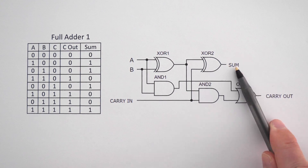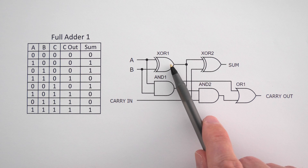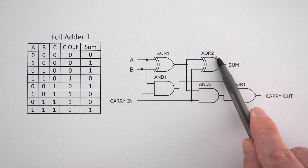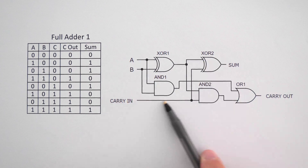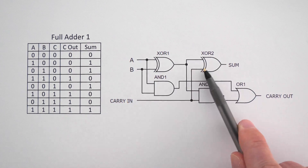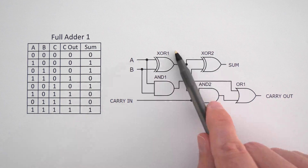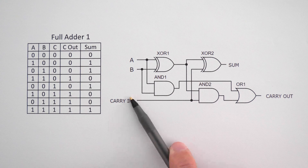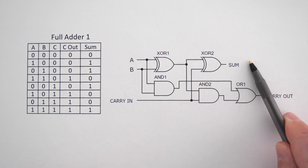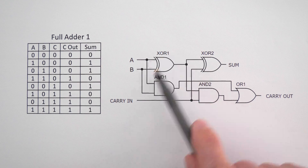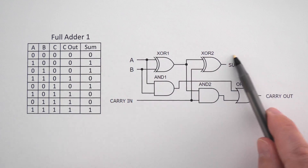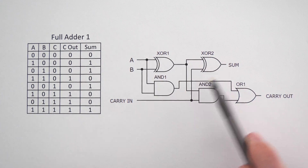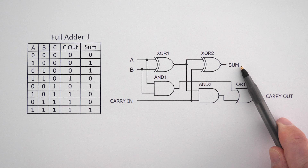Let's look at the sum bit first. We have exclusive OR gate 1, the same as before, and the output of that feeds into input A of exclusive OR gate 2. Our carry in feeds into input B of exclusive OR gate 2. So if exclusive OR gate 1 was on and carry in is off, our sum is still on. If both exclusive OR gate 1 and carry in are on, the output will be off. If exclusive OR gate 1 is off but carry in is on, then our output is on — which is what we want.